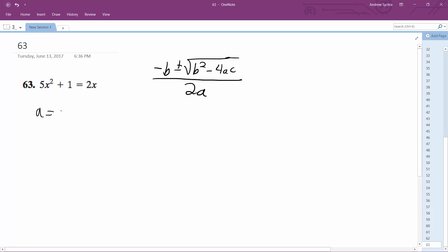a equals 5, b equals 2, actually equals negative 2. Hold on a second here, I need to rewrite this. So this is 5x squared minus 2x plus 1 equals 0. a equals 5, b equals negative 2, c equals 1.